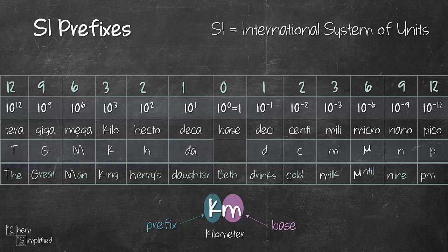The difference between the left side and the right side on the deci, centi, milli all the way to pico there's a negative sign in front. So if you remember the great man King Henry's daughter Beth drinks cold milk until 9 p.m., and then you go from 0, 1, 2, 3, 6, 9, 12 - do that on both sides and then make sure you put in the negative sign for the right hand side which is deci all the way to pico and you'll successfully memorize all 12 SI prefixes. Hope this helps.